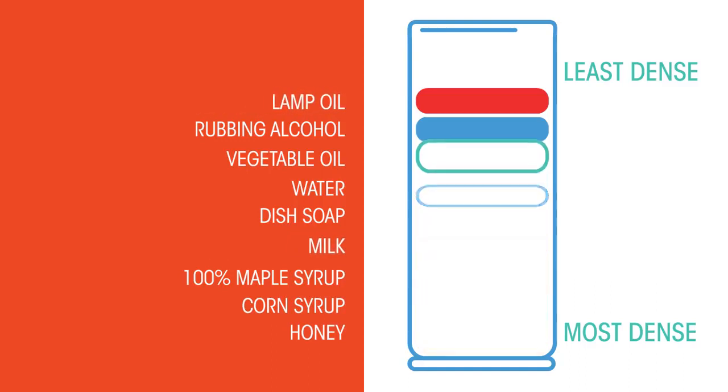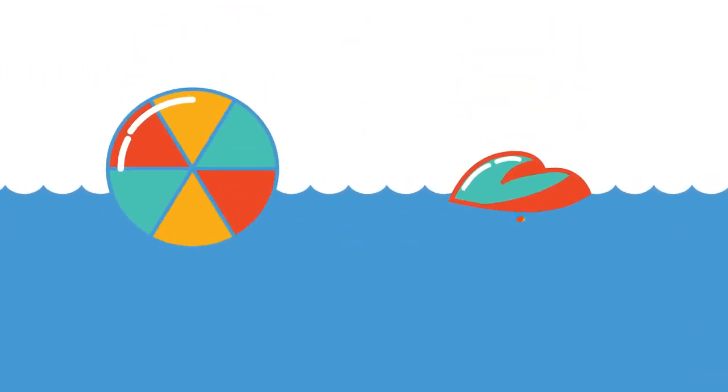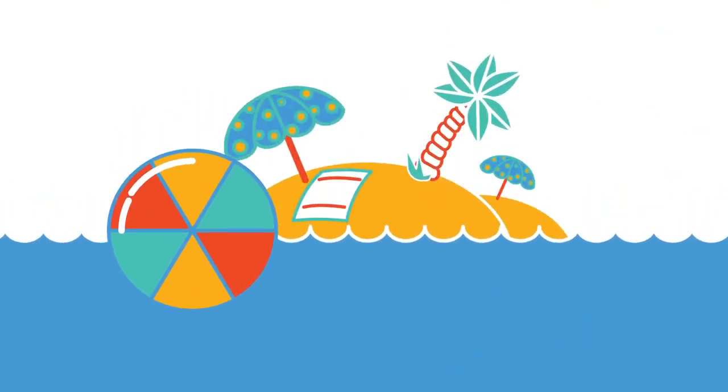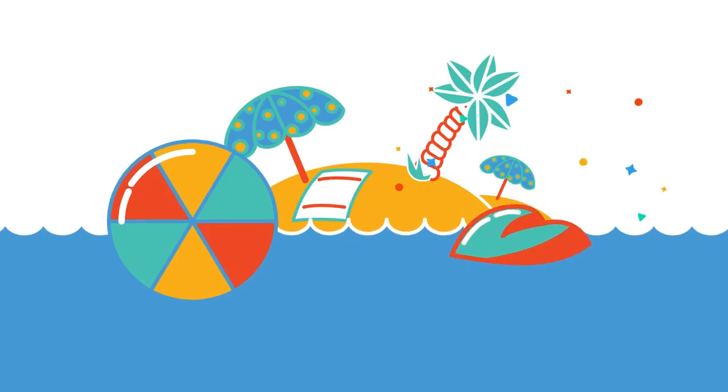But what about the densities between different states? Look at the world around you, think of floating and sinking. When you go to the beach, why does the big beach ball float, whereas the small heavy pebble sinks?